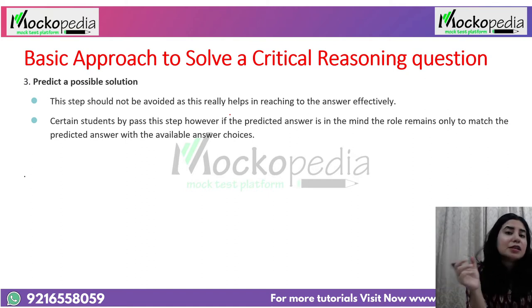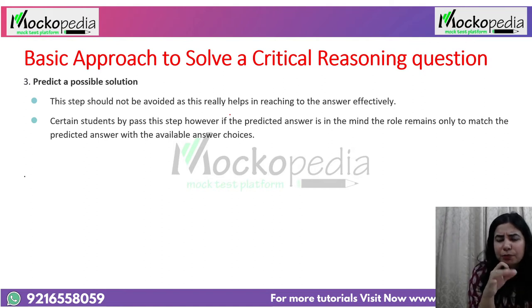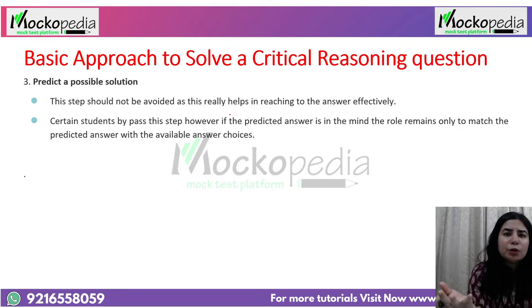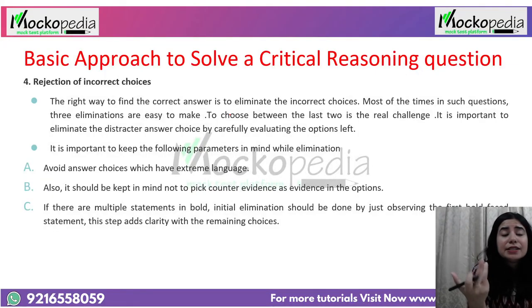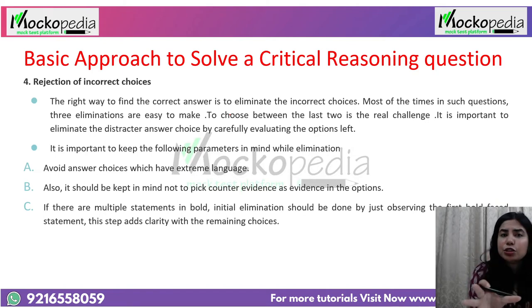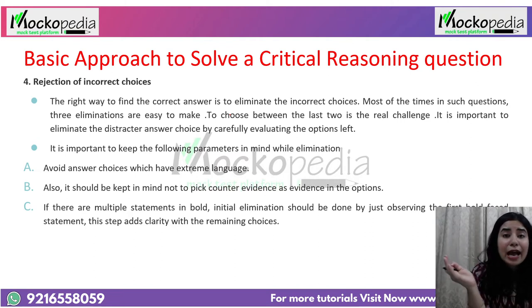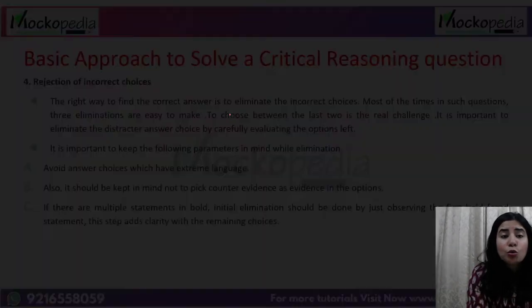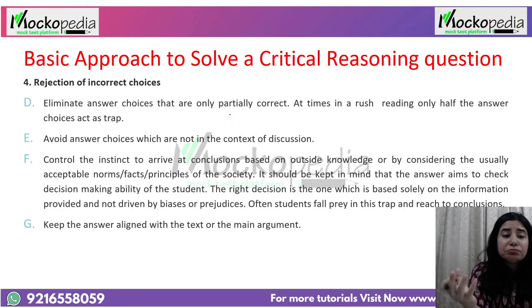There are trap answer choices — some easy to eliminate, some tricky where you might get swayed. If you have in mind what the correct answer should look like, you will overcome this problem. Eliminate answer choices which are extreme or partially correct — that is a major trap where half of the choice is correct and the other half incorrect. Check each and every word. Stick to the main text; avoid your own reasoning or instinct, and don't go beyond the context of discussion.